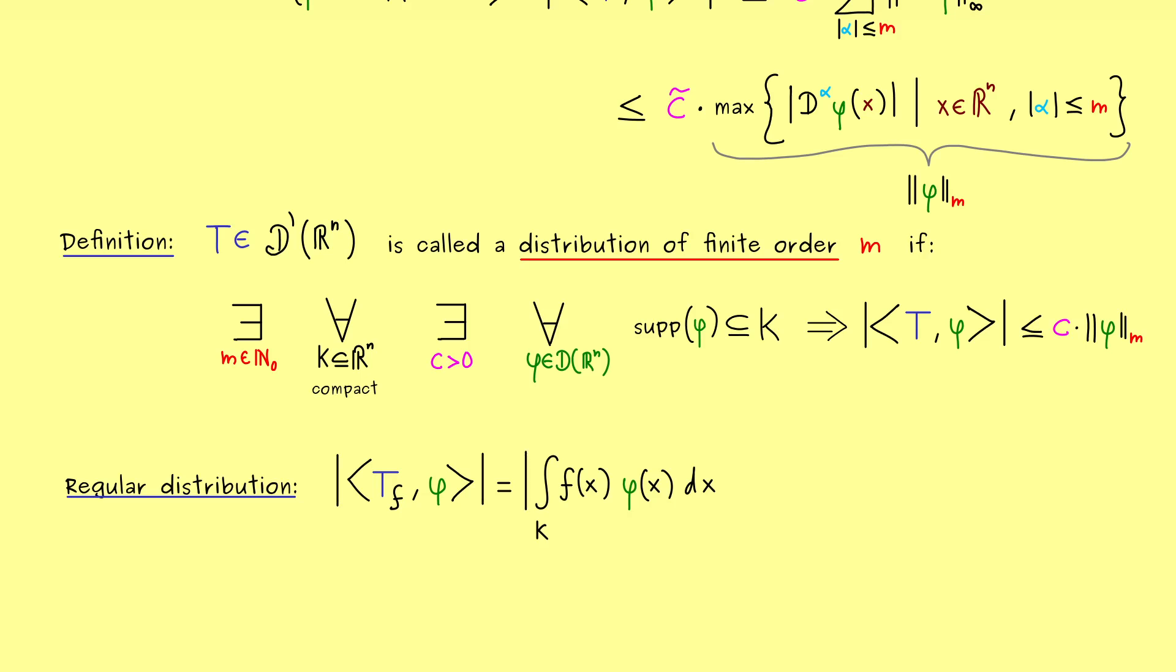And now you see, we just take the absolute value and then we have a nice estimate for that. Namely, we just push the absolute value inside the integral and then we pull out the supremum norm of φ. And please note, the supremum norm of φ would correspond to an index m is equal to 0. In other words, here in front we have our constant c and we see we have a finite order distribution of order 0.